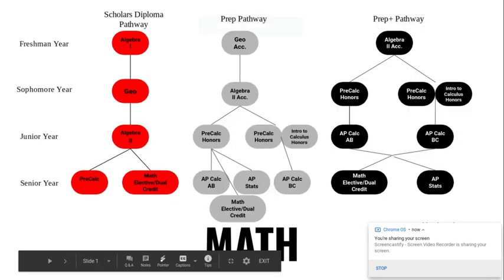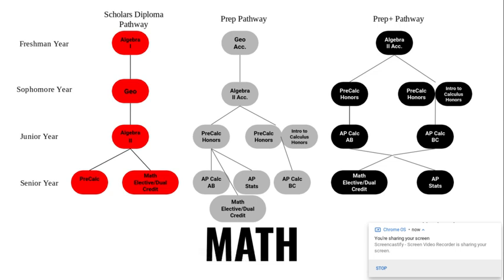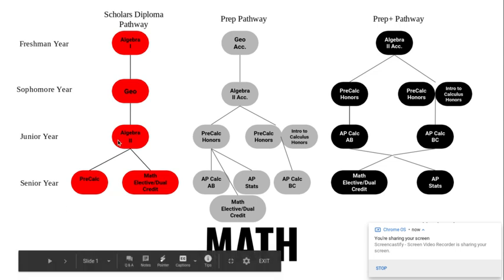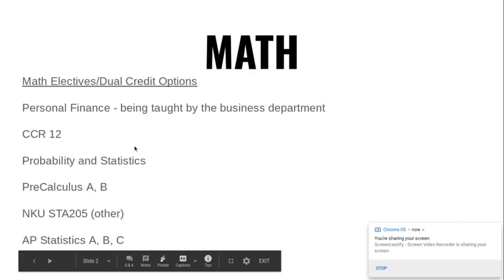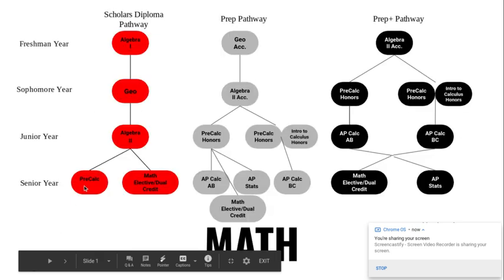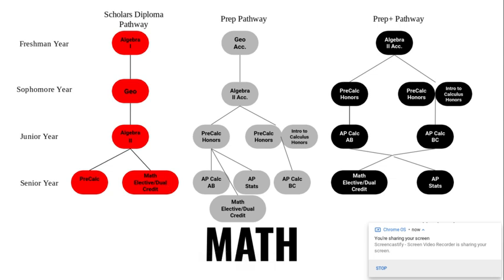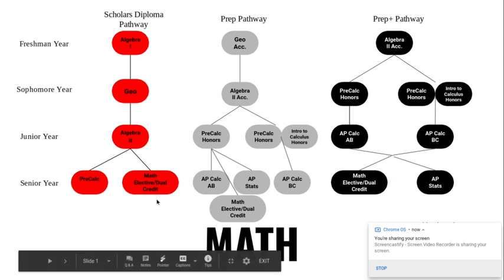Hi, if you are currently a junior and you are looking to graduate in 2021, it is likely that you just took Algebra 2 and your next step next year is to take either pre-calculus or another math elective or dual credit option, which I will address momentarily.